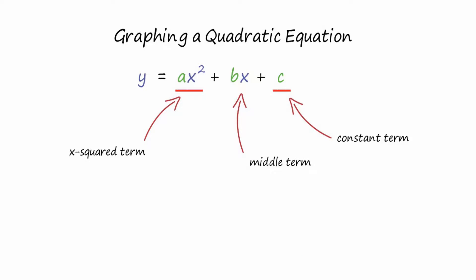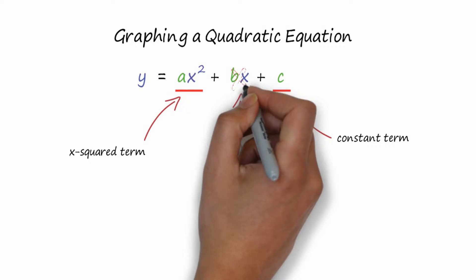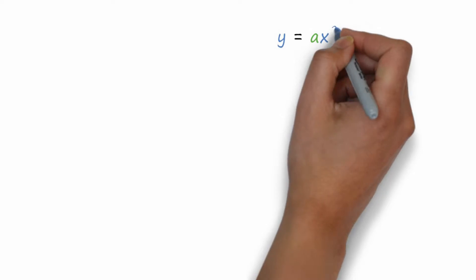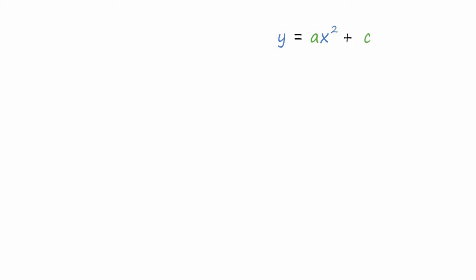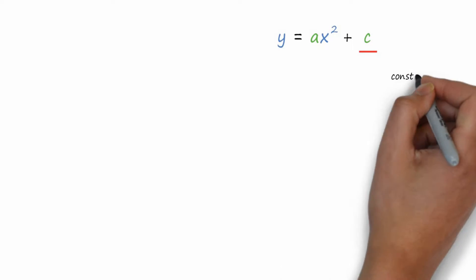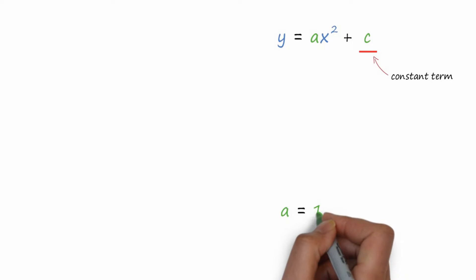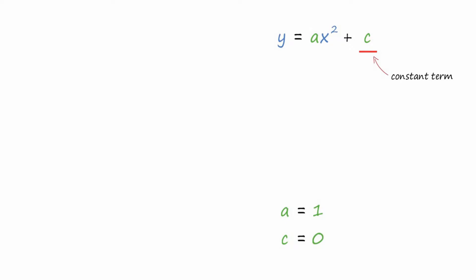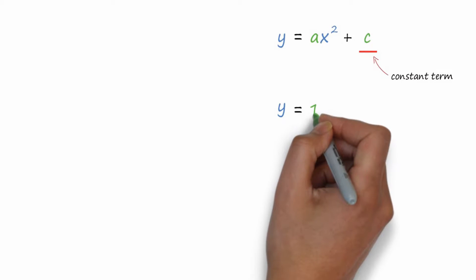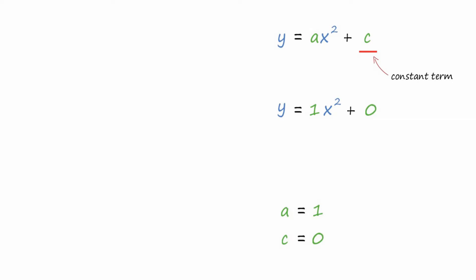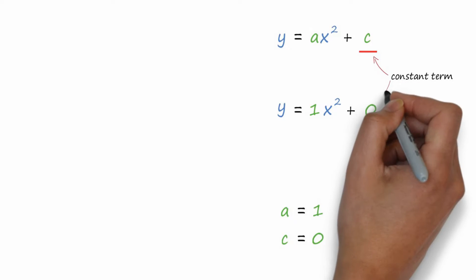In this lesson, we're not going to do anything with the middle term, so we'll take that out. What we're left with is Y equals AX squared plus C, where C is the constant term. We want to see how the constant term affects the graph of a parabola, so we're going to set A equal to 1, which gives us X squared, and C equal to 0 to start with.